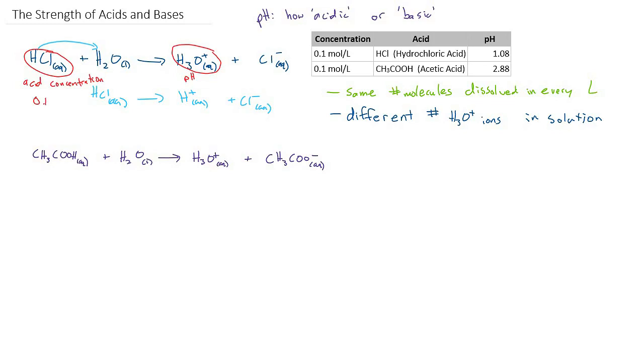So both of these acids, we dumped in 0.1 moles per liter, and we measured the pH of the resulting solution. So how could the pH be different for the two of them? How could the number of hydronium ions be different if we dumped in the same amount of the reactant? And the answer to that question challenges a basic assumption that we've often made, that reactions will go to completion. And that is not always the case.